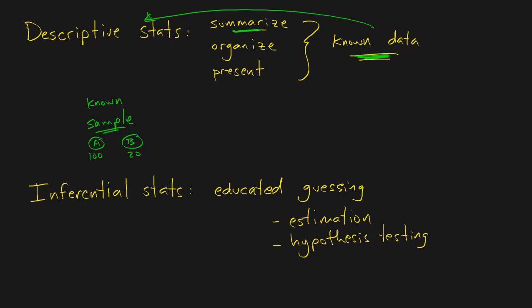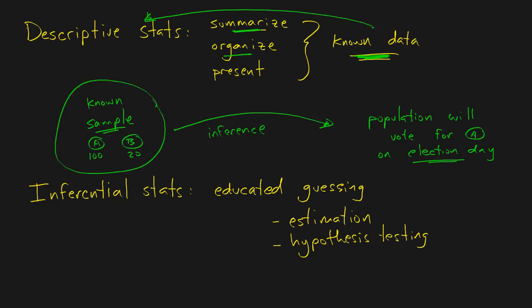But if we want to say that the population will vote for candidate A on election day, we're no longer working with things we know. We're not presenting things we know. This requires an inference. We're assuming that our sample describes what happens with the entire population. That's an inference.